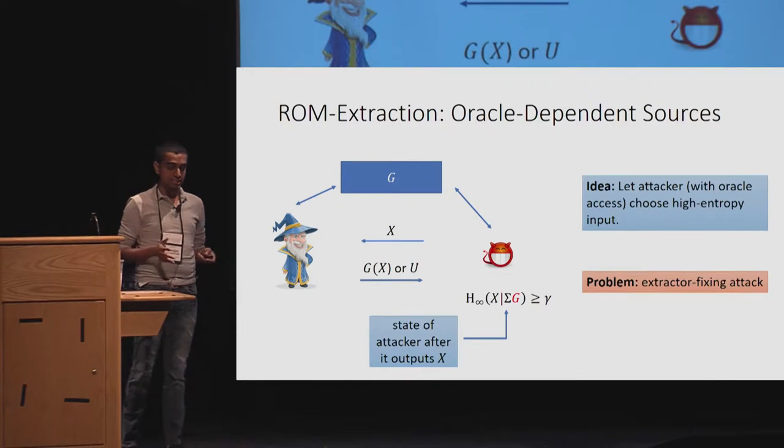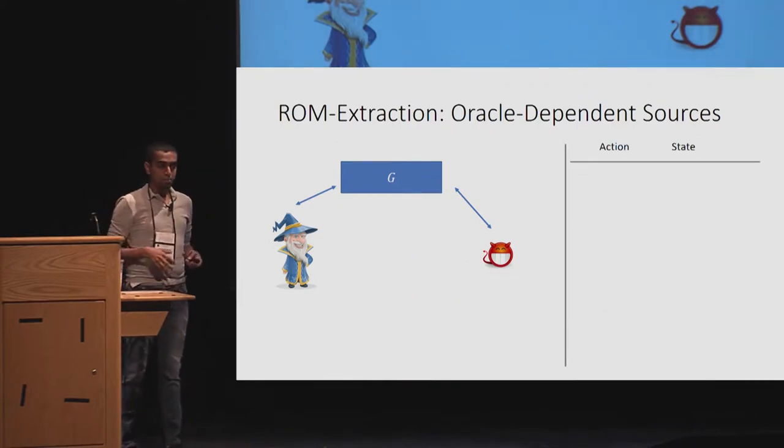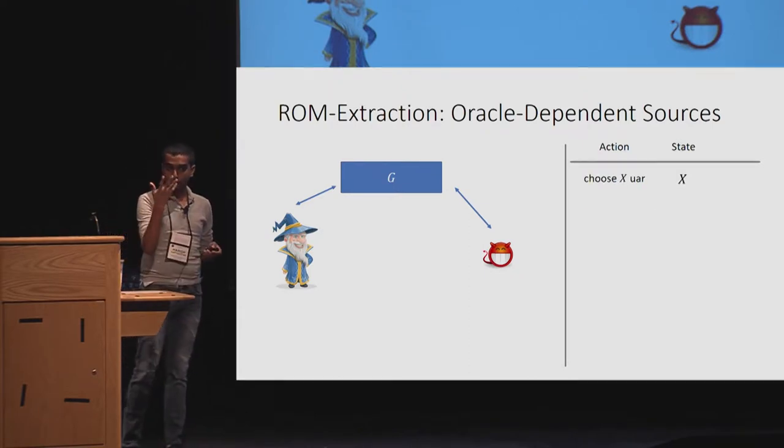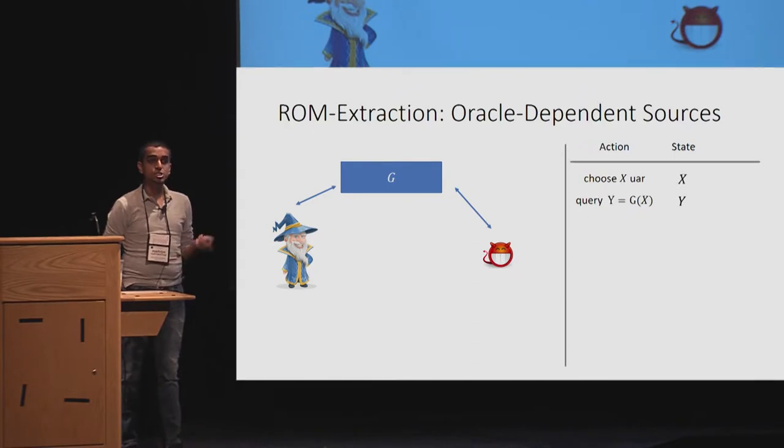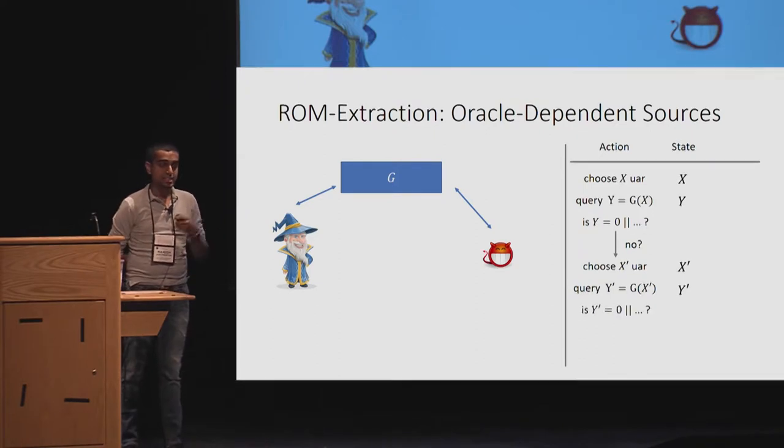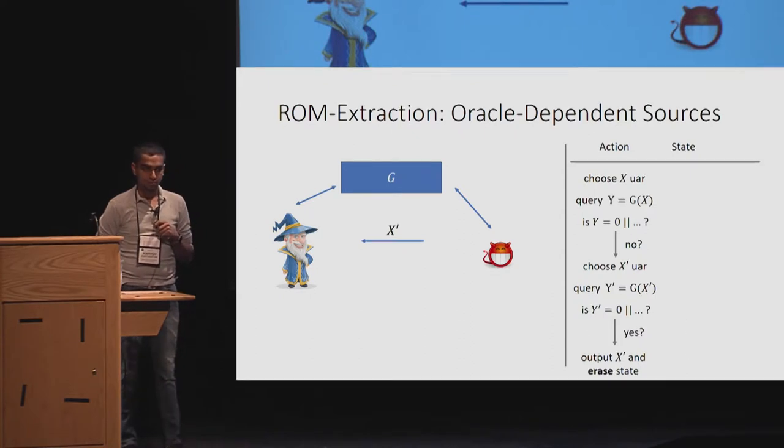The next step, we can look at conditioning it in addition to sigma on G. Now, does it work? Unfortunately, no, because we come up with a bigger problem, which is the extractor fixing attack. The setting is as before, but this is the attack. The attacker chooses X uniformly at random. It queries Y as G of X, and it checks to see if Y begins with 0. If not, it chooses X prime uniformly at random, does querying to get Y prime, and then it checks to see if Y prime is 0. Now, at this point, it outputs, if it begins with 0, it outputs X prime as its guess, and it empties the state.